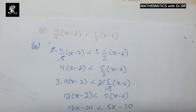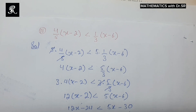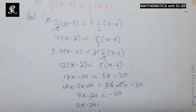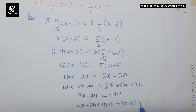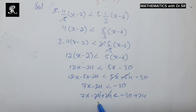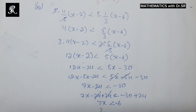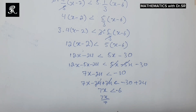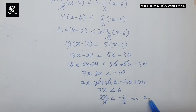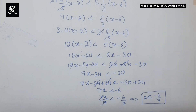Now we shift the constant term to the right side. We get 7x strictly less than negative 30 plus 24, which gives negative 6. Then we divide throughout the inequality by 7, and we get x is strictly less than negative 6 over 7. This is the solution to problem 11.